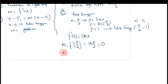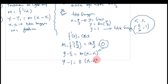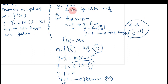Dari sini, persamaan garis singgungnya adalah Y dikurang Y1 sama dengan M dikali X dikurang X1. Substitusi X1 = π/2, Y1 = 1, M = 0. Maka Y dikurang 1 sama dengan 0 dikali (X dikurang π/2). Hasilnya 0. Maka persamaan garis singgungnya adalah Y sama dengan 1.